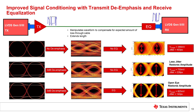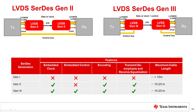Here are some more illustrations emphasizing the benefits of de-emphasis and equalization. As you can see, with both of these features you will have a more open eye, less jitter, and can travel a farther distance than without these features. With Gen 1 devices, cable length is heavily limited by pair-to-pair skew and cable attenuation. The features that address these issues help extend the cable length of Gen 2 and Gen 3 SERDES by more than twice that of Gen 1.